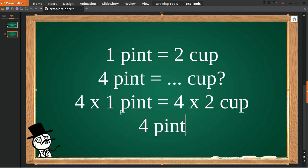Okay, now four multiply one is equal to four pints, equal sign, and four multiply two is eight cups. Yep, that's it, that's all, your answer.